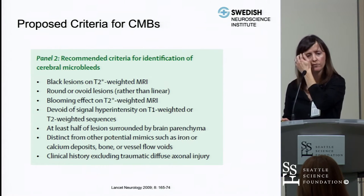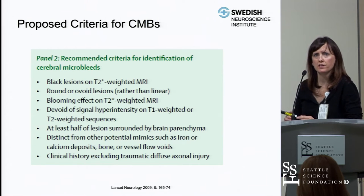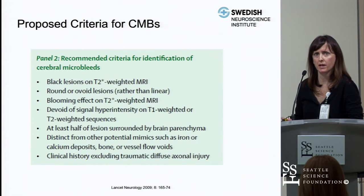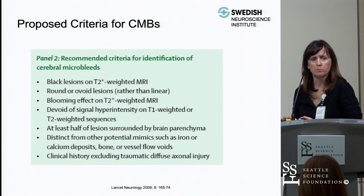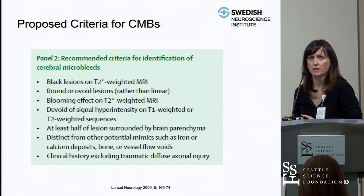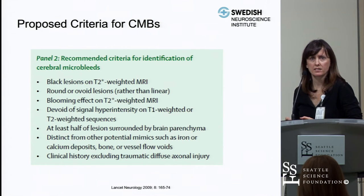Proposed criteria for identifying cerebral microbleeds were published in 2009 in Lancet Neurology. Microbleeds should be black lesions on T2 star-weighted images, round or ovoid rather than linear — linear lesions could be due to a blood vessel. There is blooming artifact on T2 star-weighted images. They should be devoid of signal hyperintensity on T1 or T2, and at least half the lesion should be surrounded by brain parenchyma.